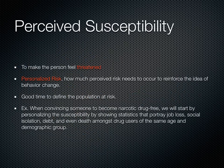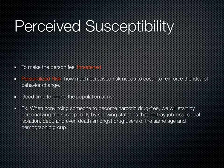We'll start with perceived susceptibility, the first construct, highlighted in red. This is the first of two constructs dealing with threat. The person has to feel threatened or there is no incentive to do a health behavior change. The risk has to be personalized — how much perceived risk is needed to reinforce the idea of behavior change? This is a great time to define the population at risk and show that the risk is not random but specific to the health behavior and audience.